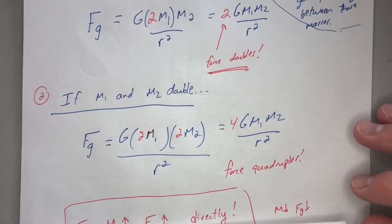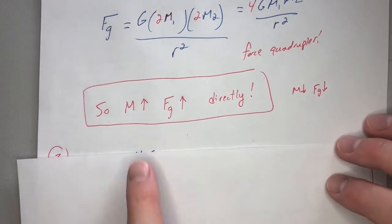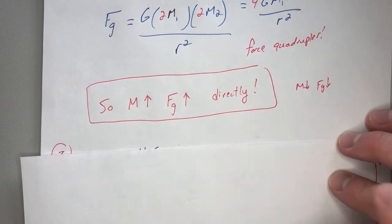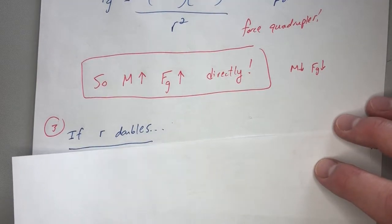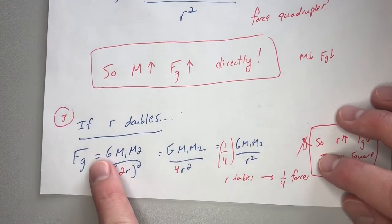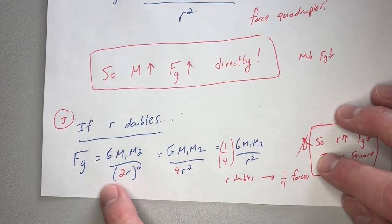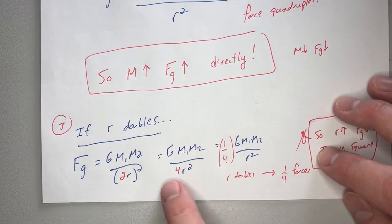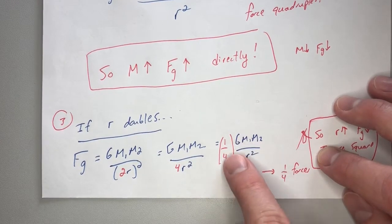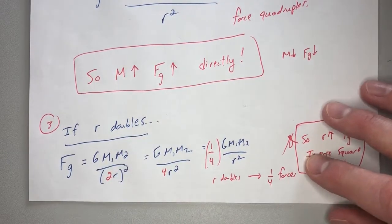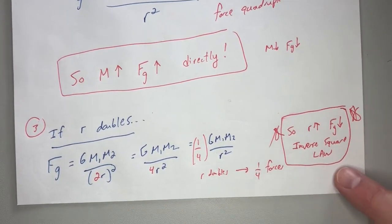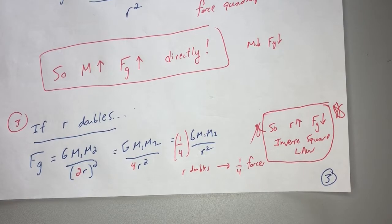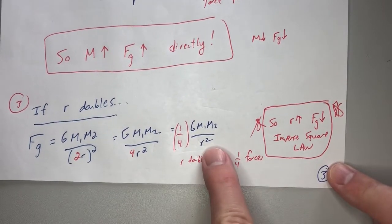Last, let's mess with the separation between the two objects. If mass goes up, Fg goes up; if mass goes down, Fg goes down — they are directly related. But if R doubles, be careful: the separation is getting squared. So big G M1 M2 over (2r) squared equals big G M1 M2 over 4r squared, and you pull out 1/4. When you double the separation, you feel 1/4 the force of gravity. They'll test you on this — it's an inverse square law, because as separation increases the force decreases, and it's squared so the effect is large.